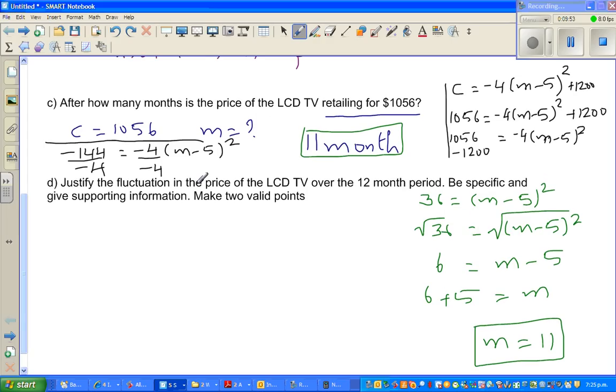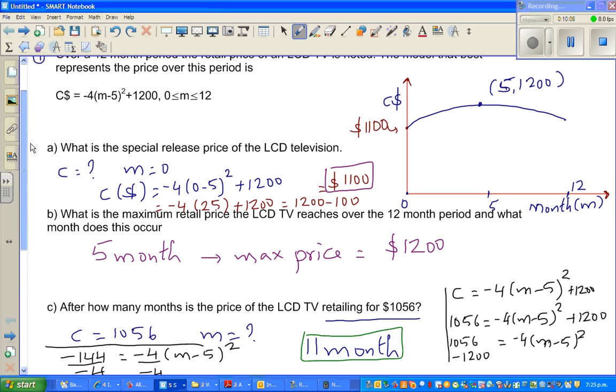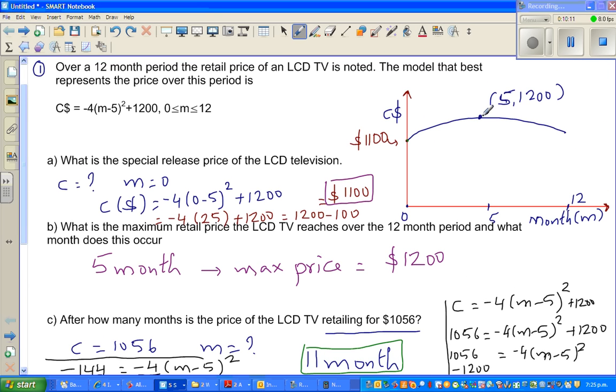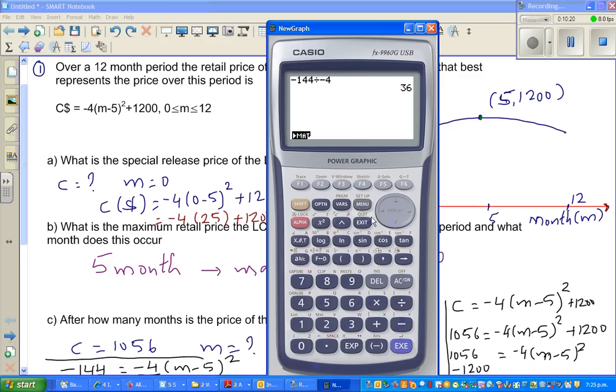The last question is where you have to make statements. Justify the fluctuation in the price of the LCD TV over the 12-month period. It started with 1100, peaked at 1200, and after 12 months it went down to 1004. So it started at 1100, reached the peak after five months, then the prices are going down. After 12 months it went even below the initial release price.